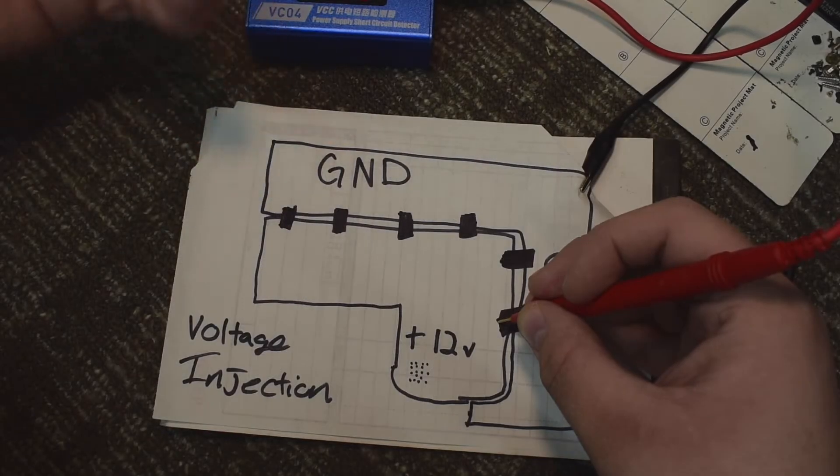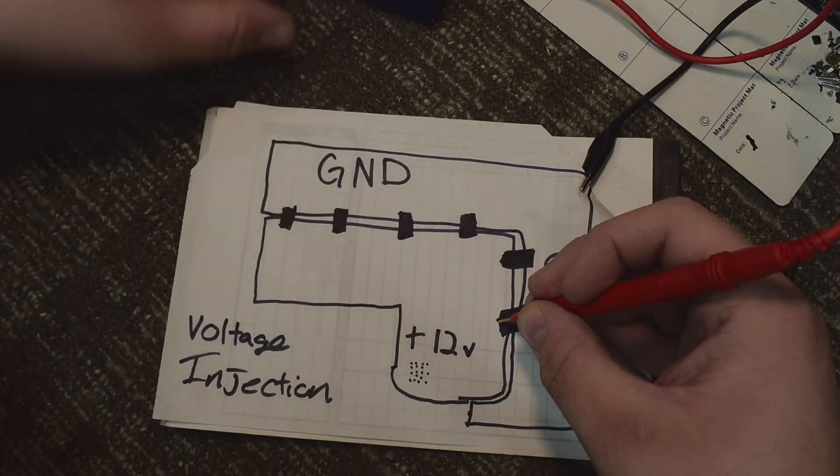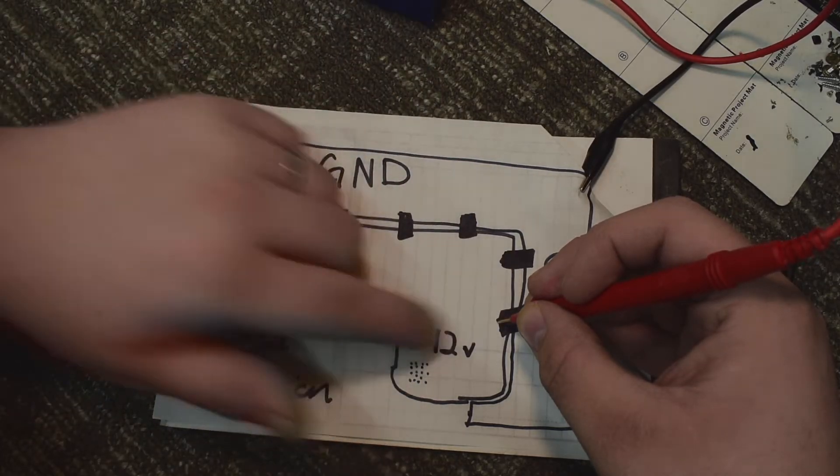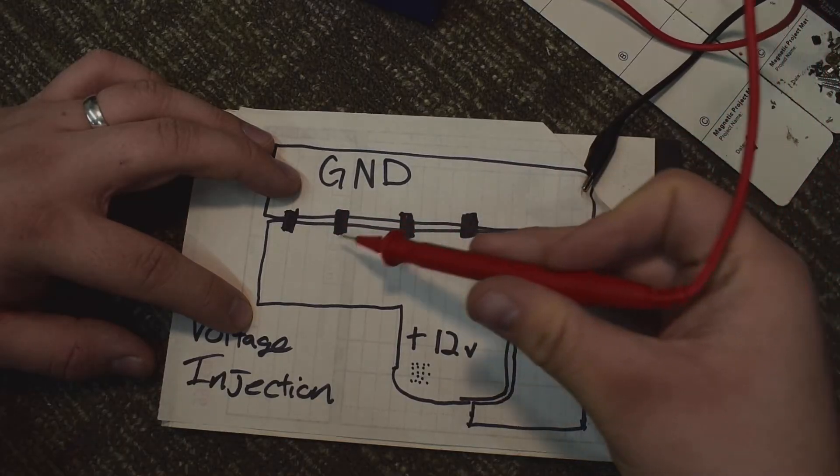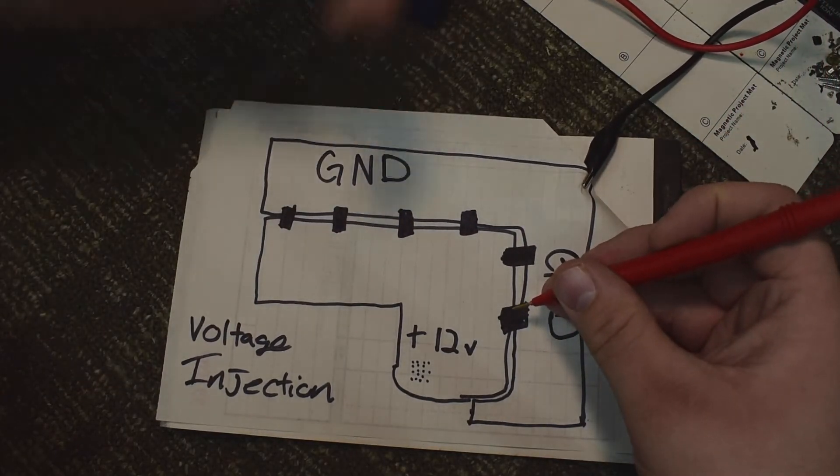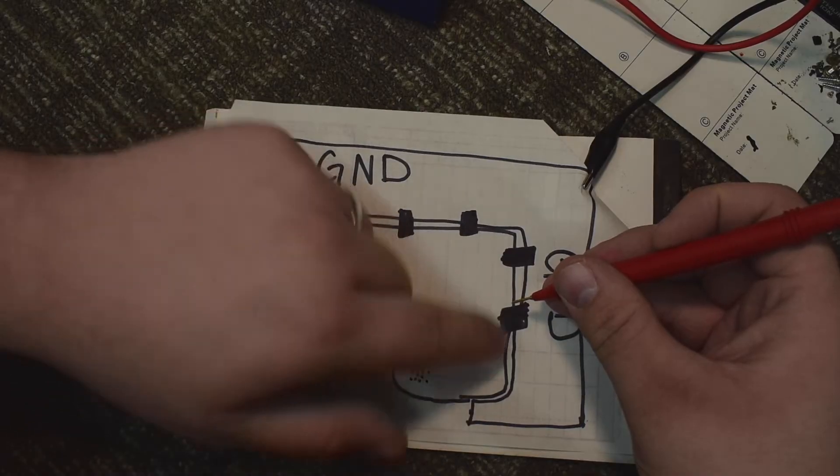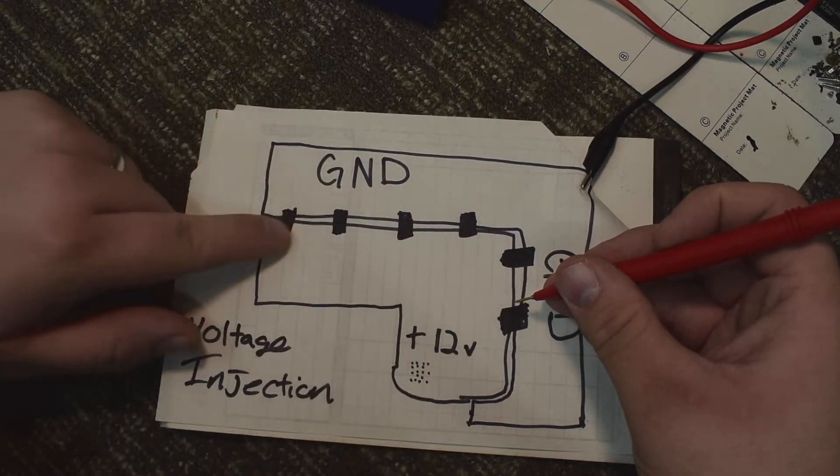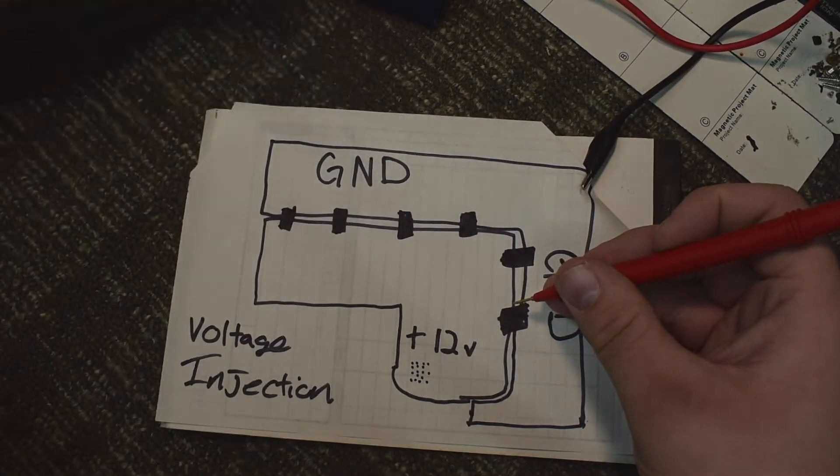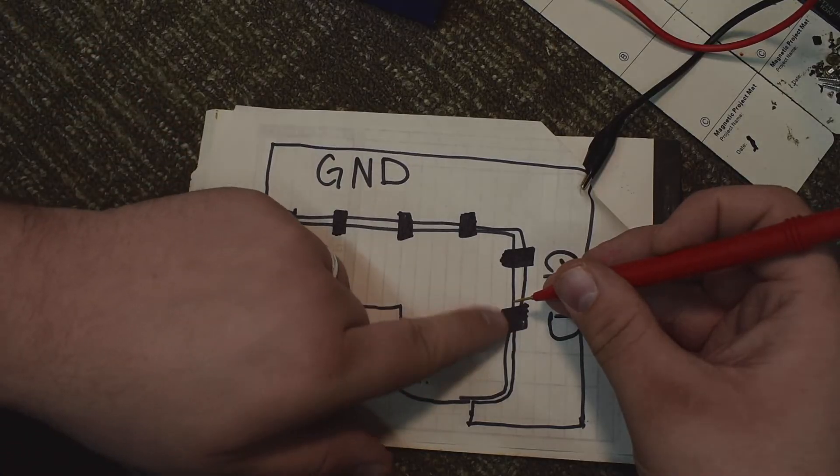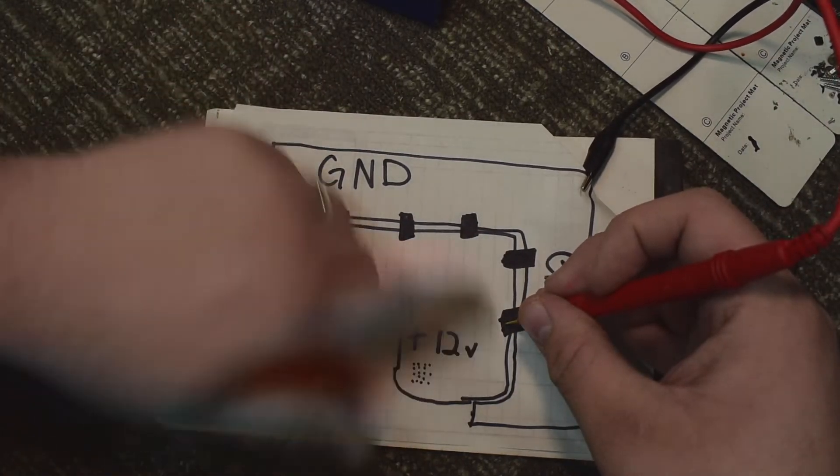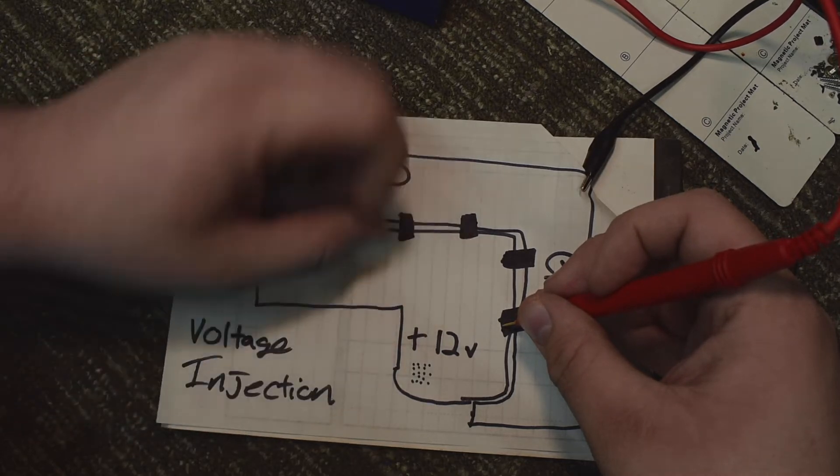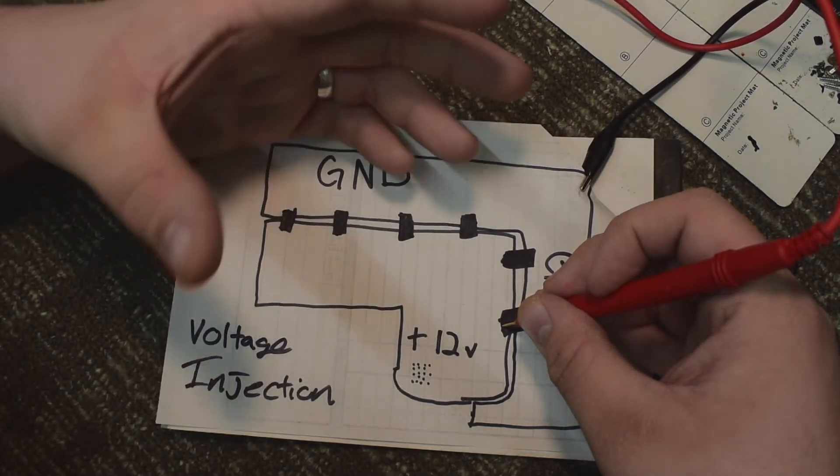Now there are two ways to find that component that is shorted. You could remove each capacitor until the short is removed, or you could use alcohol on the components. People put alcohol in the area, apply the voltage to inject it, and one of the components is going to get really hot and evaporate the alcohol very quickly.